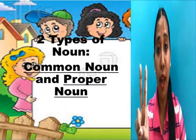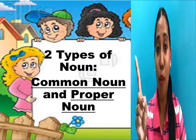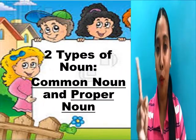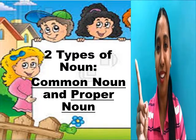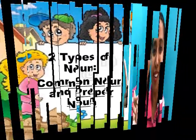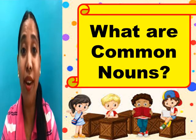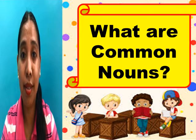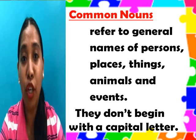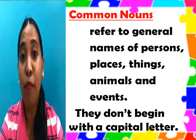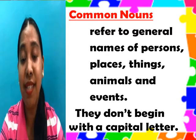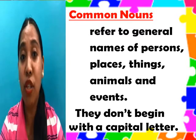There are two types of nouns: common noun and proper noun. Common nouns refer to the general name of persons, places, things, animals, and events. Remember, they don't begin with a capital letter.